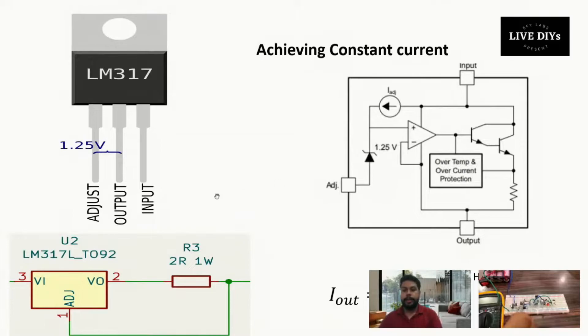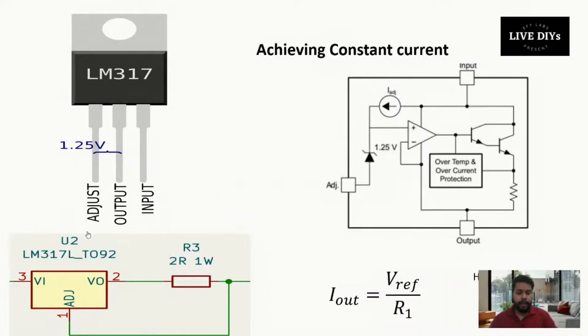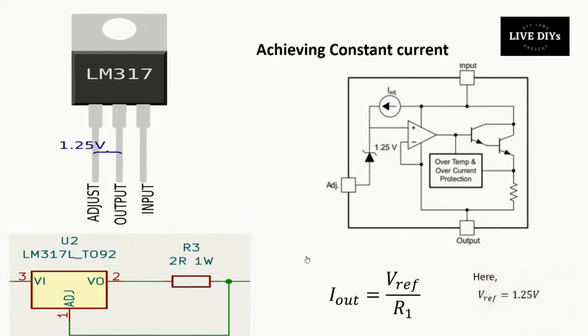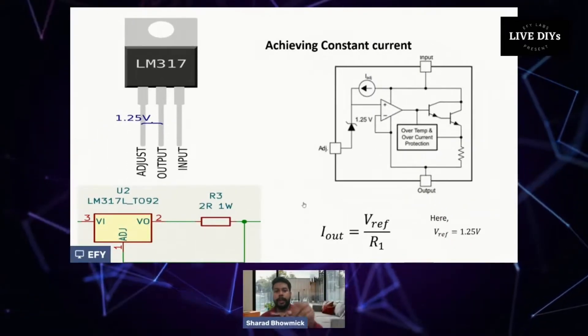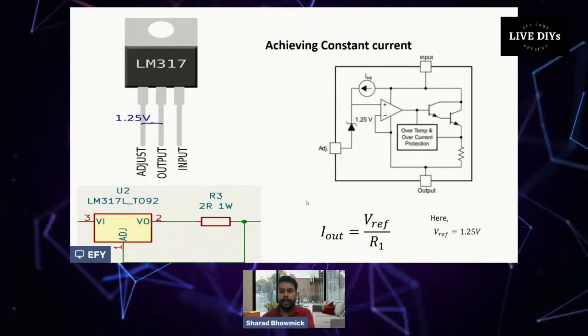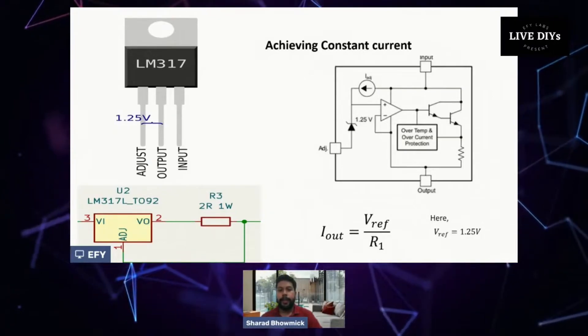To make the circuit more durable and better, we'll use LM317 to achieve constant current. For achieving constant current, we can connect the LM317 as shown in the figure below.